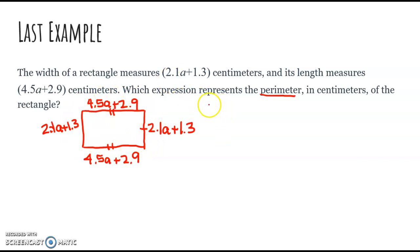We're going to add all these together. So 2.1a plus 1.3 plus 2.1a plus 1.3 plus 4.5a plus 2.9 plus 4.5a plus 2.9. So we're going to look for all of our like terms. So I've got 2.1a, 2.1a, 4.5a, and 4.5a. And we're going to add all of our like terms.